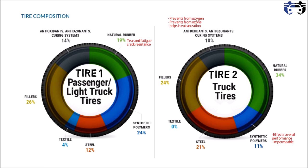Steel makes up 21% in Tire 2 and 12% in Tire 1. Steel is used for making belts and beads, which stiffens the tire and improves road handling. Textile is 4% in Tire 1 and 0% in Tire 2. As the name suggests, these are fabric cords reinforced in the tire that maintain the dimensional stability of the tire.